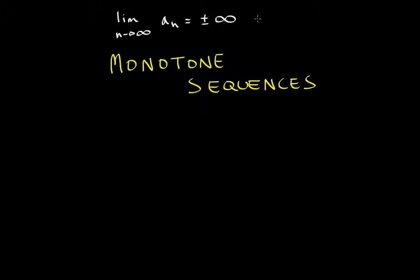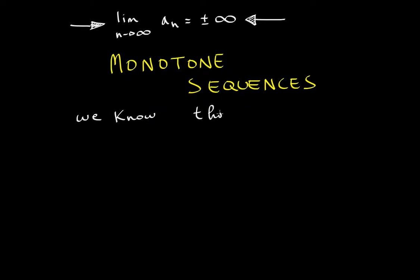In the last video, I showed you how you would prove sequences which are approaching positive or negative infinity. In this video, I will be teaching you about monotone sequences. We know that a convergent sequence is bounded — I showed this to you a few videos ago. So if a sub n is convergent, then a sub n is bounded as well.